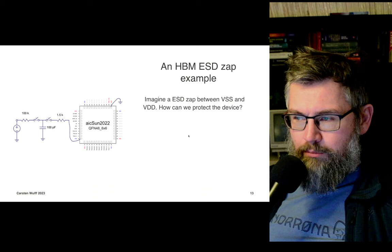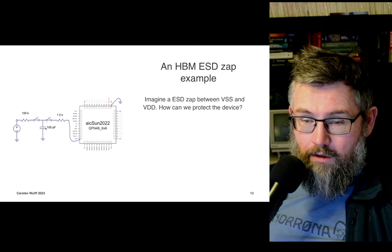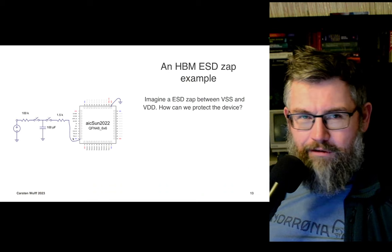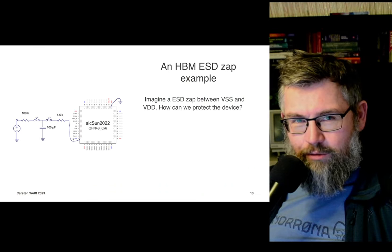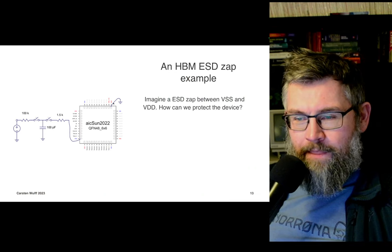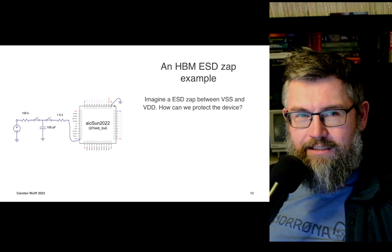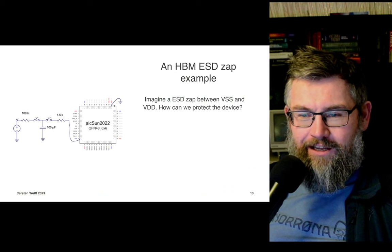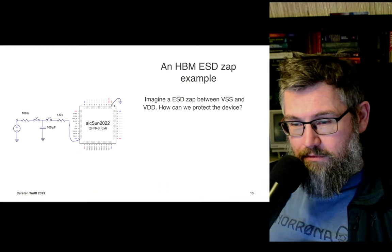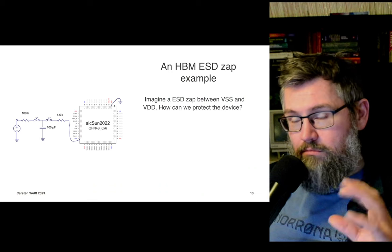Let's take an example of a human body model ESD zap. In this case, I have slowly charged a 100 pF capacitor to about a kilowatt or more, and then I discharge the capacitor through this 1.5k resistor. Now, nothing prevents me from pushing that current into ground. Nothing says that you have to put in the ESD zap the right way around for a circuit. That means you can't really rely on VDD being a high potential and VSS being a low potential. It might have flipped around.